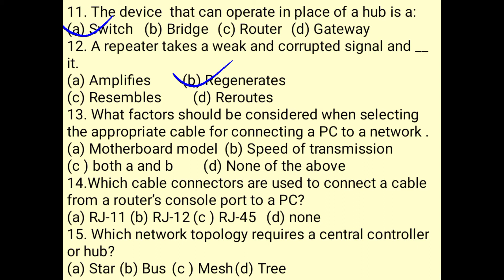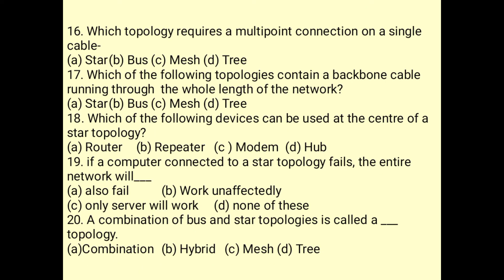When selecting the appropriate cable for connecting a PC to a network, both the motherboard model and speed of transmission should be considered. RJ45 connectors are used to connect a cable from a router console port to a PC. Star topology requires a central control hub. Bus topology requires a multipoint connection on a single cable and contains a backbone cable running through the whole length of the network.